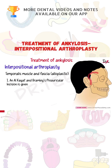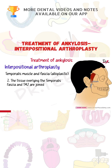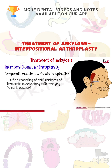Bramley's pre-auricular incision. The tissues overlying the TMJ and temporalis fascia are retracted. We identify the joint and make two horizontal osteotomy cuts, then the cut bone is removed, creating a gap.